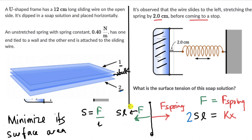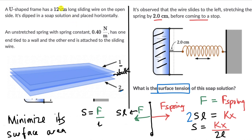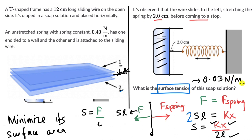We know all the values: length L = 12 cm, extension X = 2 cm, and spring constant K = 0.4 N/m. Working out S = KX / (2L) gives S = 0.03 N/m. That is the surface tension of this soap solution.